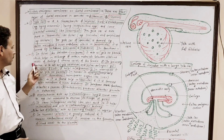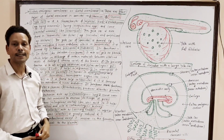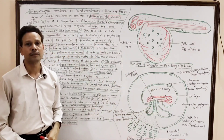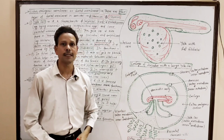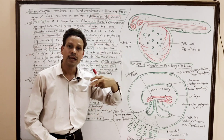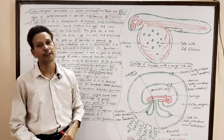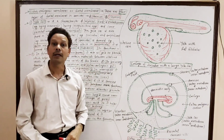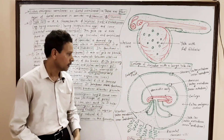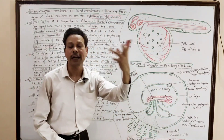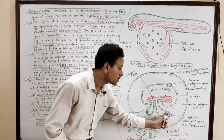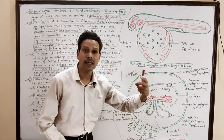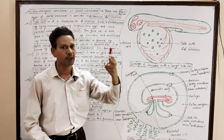In reptiles and birds, the yolk sac involves in exchange of gases — it acts as an extra embryonic lung and involves in respiration. In case of mammals and human beings, the yolk sac is greatly reduced.